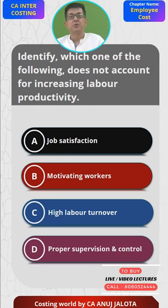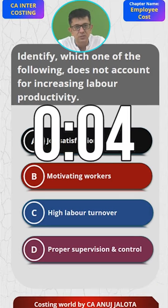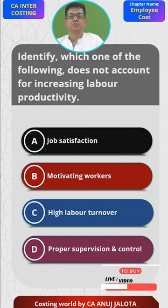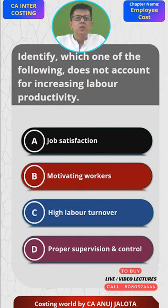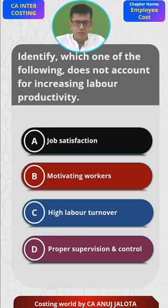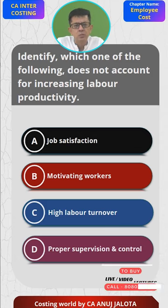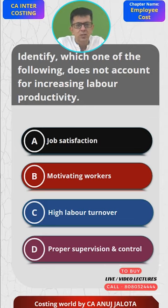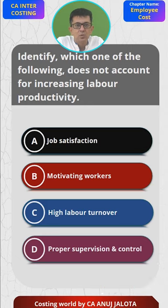First, job satisfaction — if you're satisfied with the job obviously you'll be working far better and your efficiency is going to improve. Option B, motivating workers — if there are people who motivate the workers, obviously their efficiency is going to rise. Like in Chak De, Shah Rukh Khan tries to motivate all the girls and due to that they win the world cup.